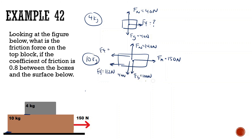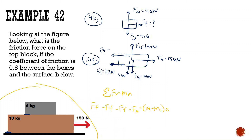To find the acceleration, we look at the whole system. Sum of all forces in x equals mass times acceleration. The internal friction forces between the blocks cancel out. So we have 150 minus 112 equals the total mass of 4 plus 10, times acceleration. That gives us: 150 minus 112 divided by 14, which equals 2.71 meters per second squared.